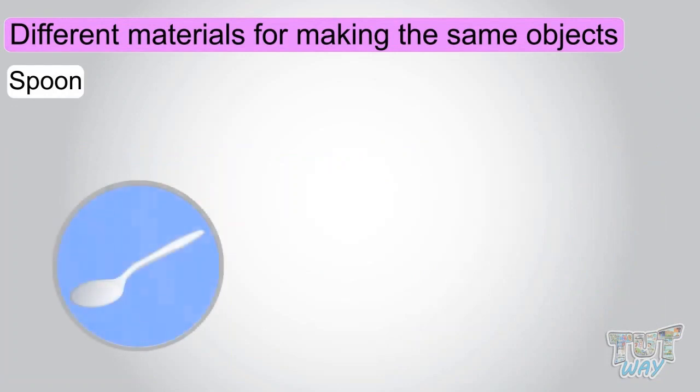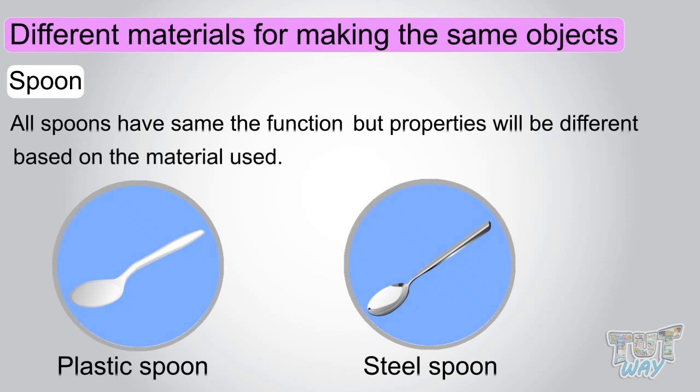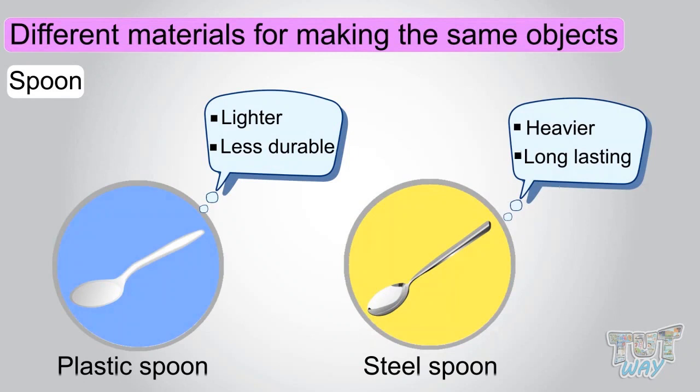Spoon. This spoon is made up of plastic. This spoon is made up of steel. All spoons have the same function. But properties will be different based on the material used. The plastic spoon will be lighter than the steel one. The steel spoon will be long-lasting than the plastic one.